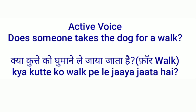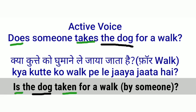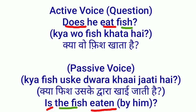'Does someone take the dog for a walk?' — question form passive: 'Is the dog taken for a walk?' 'Does' is replaced by 'is,' and 'the dog,' being the object, comes first. The third form of 'take' is 'taken.' 'Does he eat fish?' — 'Is the fish eaten by him?' Fish was the object so it becomes subject. 'He' being the subject becomes 'him' in passive.